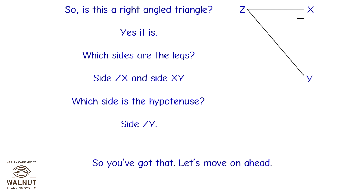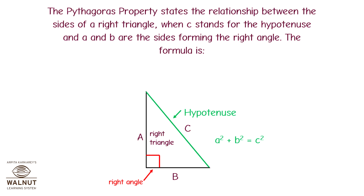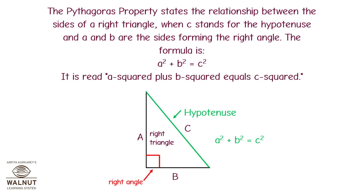So, you've got that. Let's move on ahead. The Pythagoras property states the relationship between the sides of a right triangle. When C stands for the hypotenuse and A and B are the sides forming the right angle, the formula is A squared plus B squared is equal to C squared.